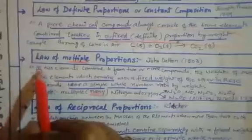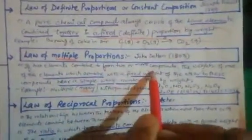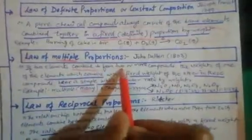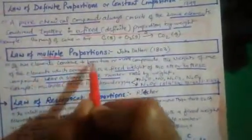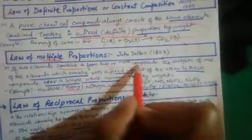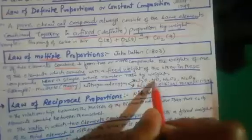The third law is the Law of Multiple Proportions — 'multiple' meaning many. This was given by John Dalton in 1803. According to this law, if two elements combine to form two or more compounds — for example, nitrogen and oxygen form many molecules: N₂O, NO, N₂O₂, N₂O₄, and N₂O₅.